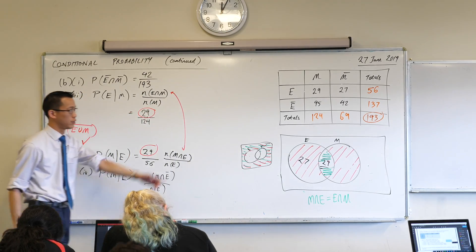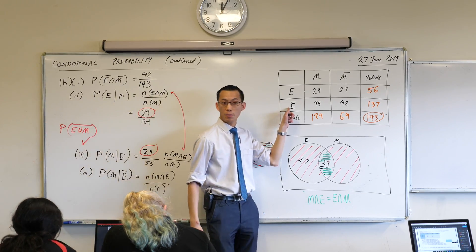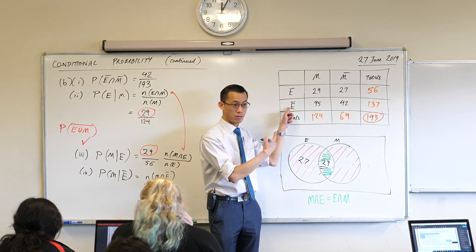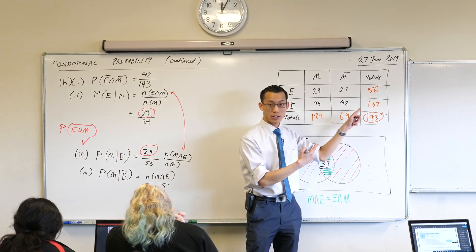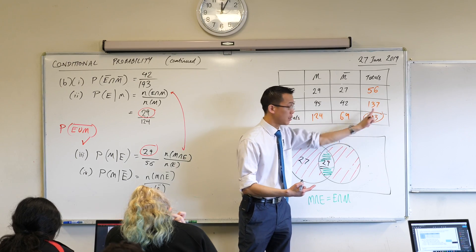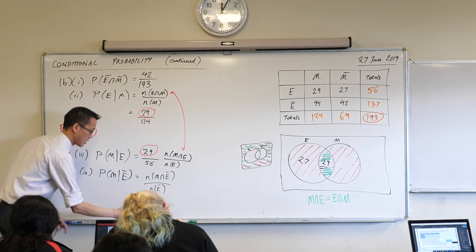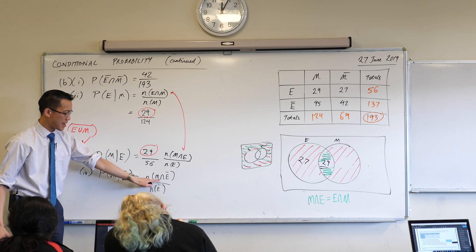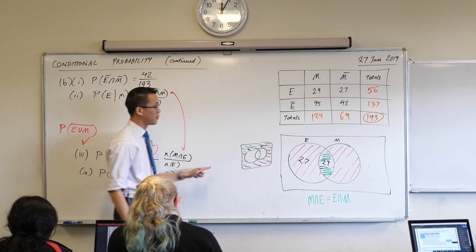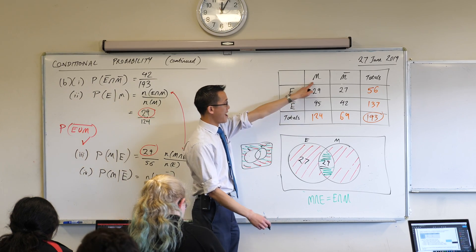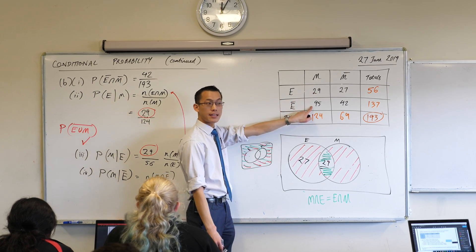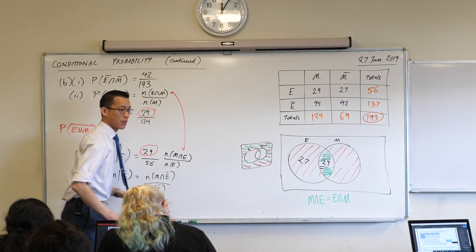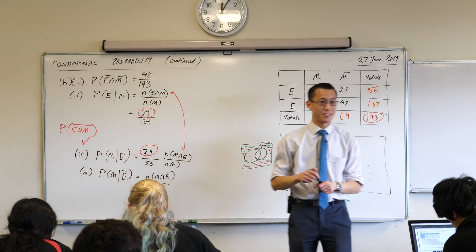Let's do it from the table. Here's E complement. So what's N of E complement? 95 — it's the whole row, isn't it? It's 137. So there's my denominator, and then over the top, M intersect E complement — M, E complement, there's the intersection — 95. Flip the table, walk off, you're done.